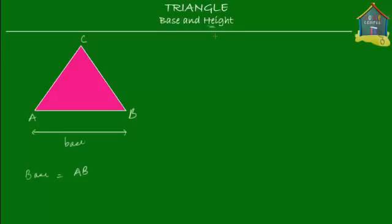What is the height of anything? If you think of your own height, how would you measure it? Well, if you measure somebody's height, you measure them from their top to their toes — top to bottom. In the case of the triangle, we apply the same principle: we measure how tall the triangle is from its top to its bottom. The top of this triangle is quite obviously corner C.